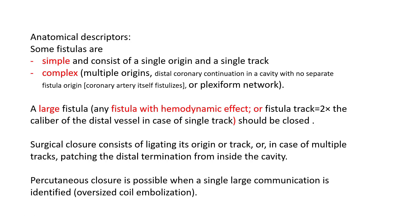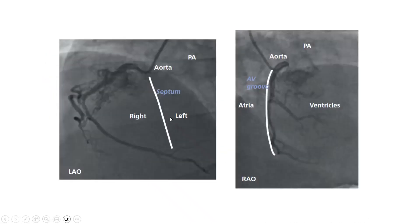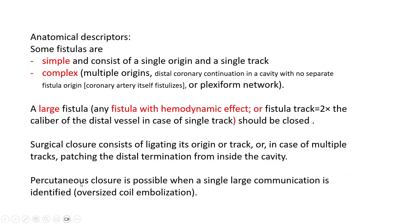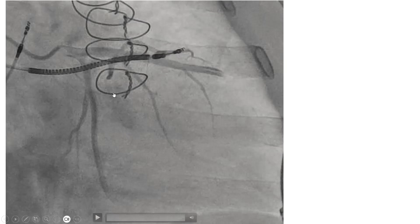How is a fistula treated? Number one, in order to treat a fistula, it has to be large, typically with hemodynamic effect. Number two, the way it's treated depends on the anatomical descriptors — that's why those descriptors are helpful, mainly to decide treatment strategy. If it is a simple fistula, it is treated surgically with ligation of its origin or track. A complex fistula is treated by patching the distal termination from inside the cavity — all those complex plexiform tracks will then thrombose. You cannot ligate all those complex tracks. Also, a simple single-track fistula may be treated percutaneously using an oversized coil embolization at the distal end of the fistula.